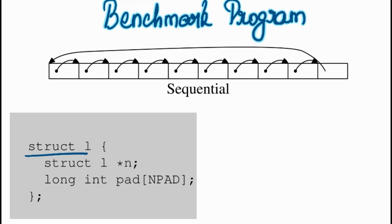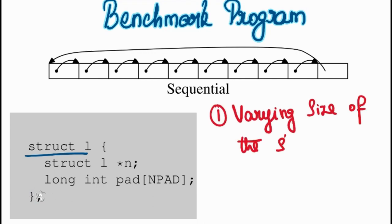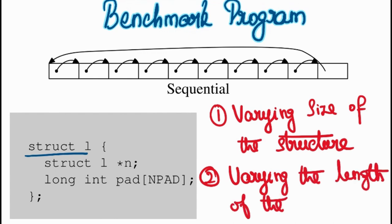For non-C programmers, you can consider the struct as an object whose size is going to vary in multiples of 8. So we are going to see the performance implications by varying the size of the structure and by varying the length of the linked list.